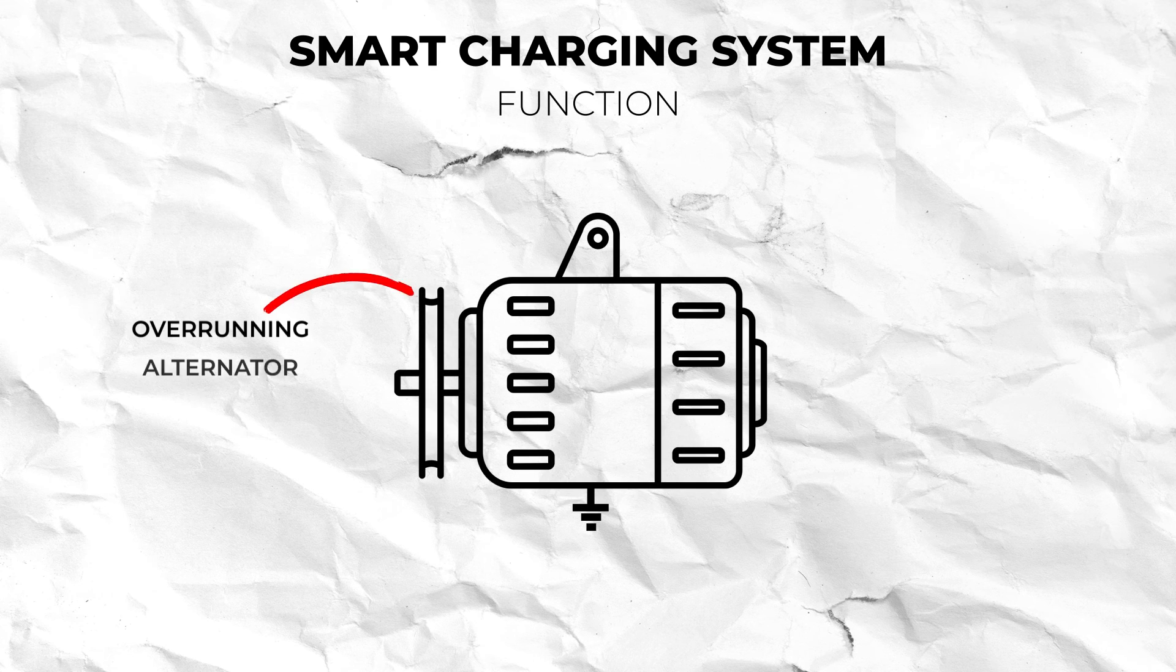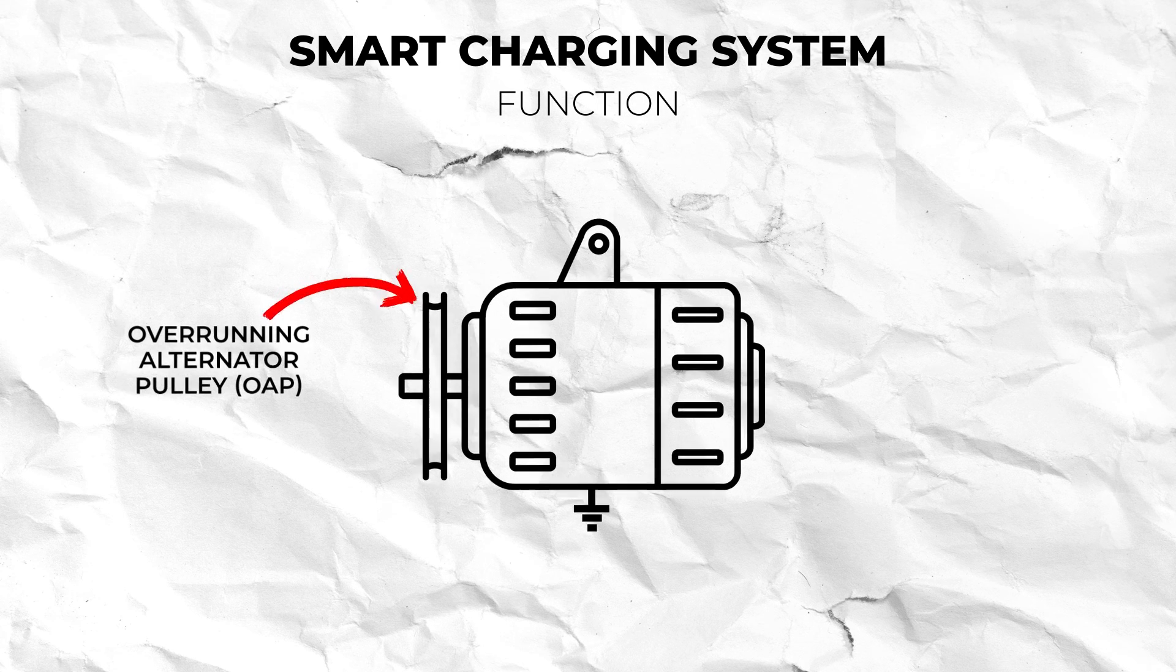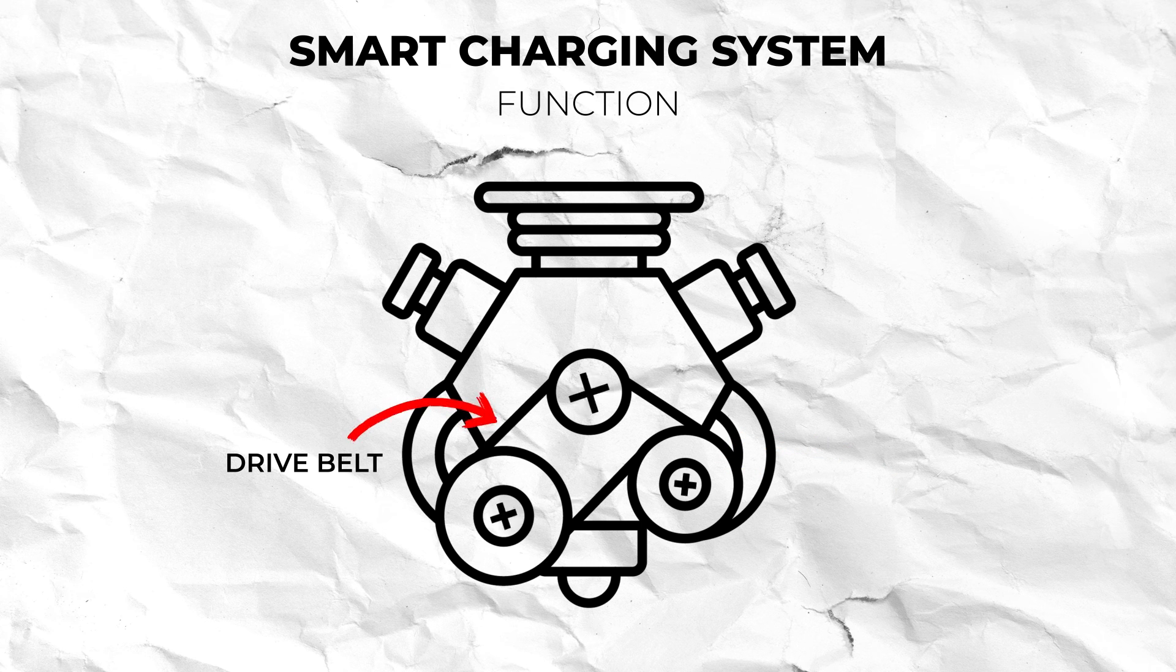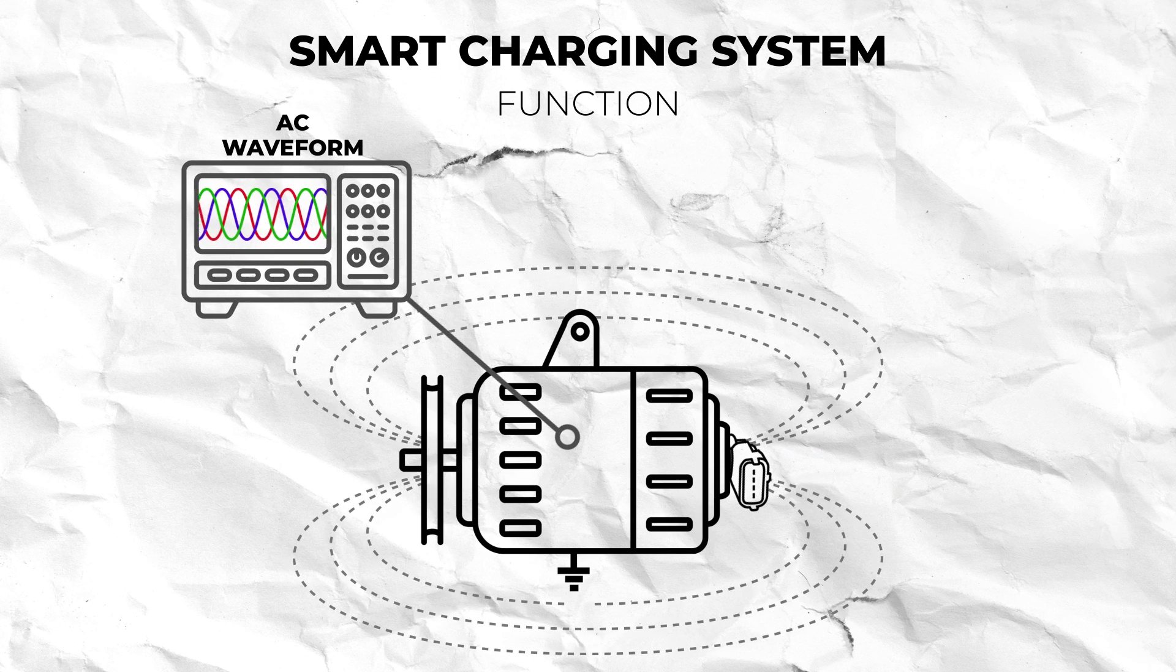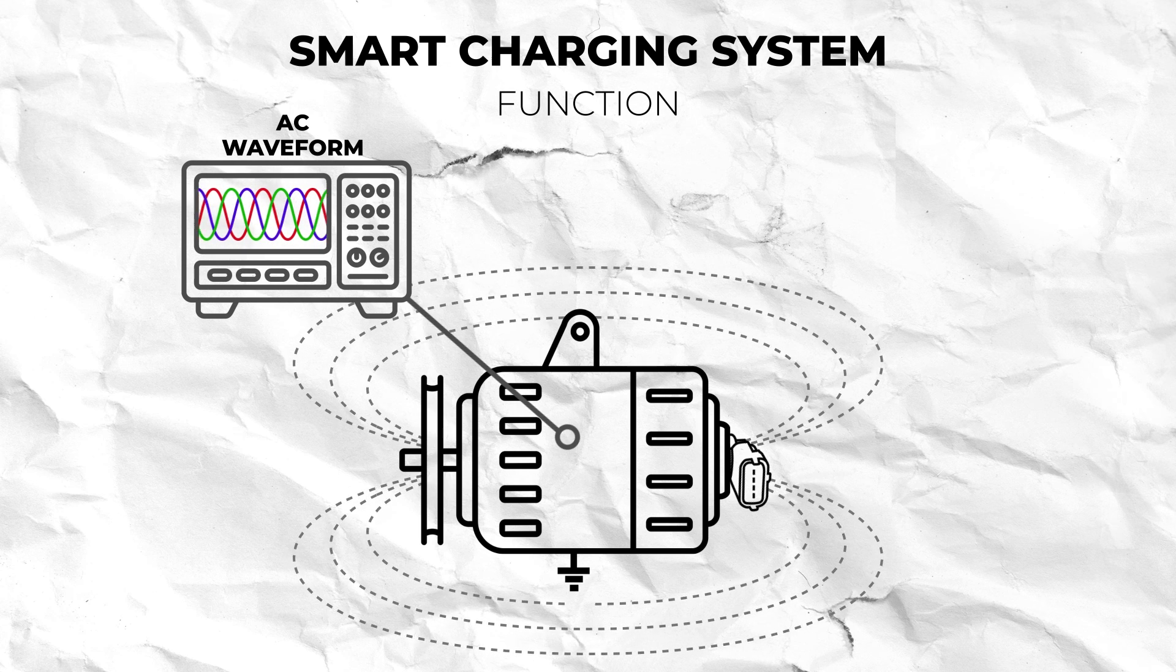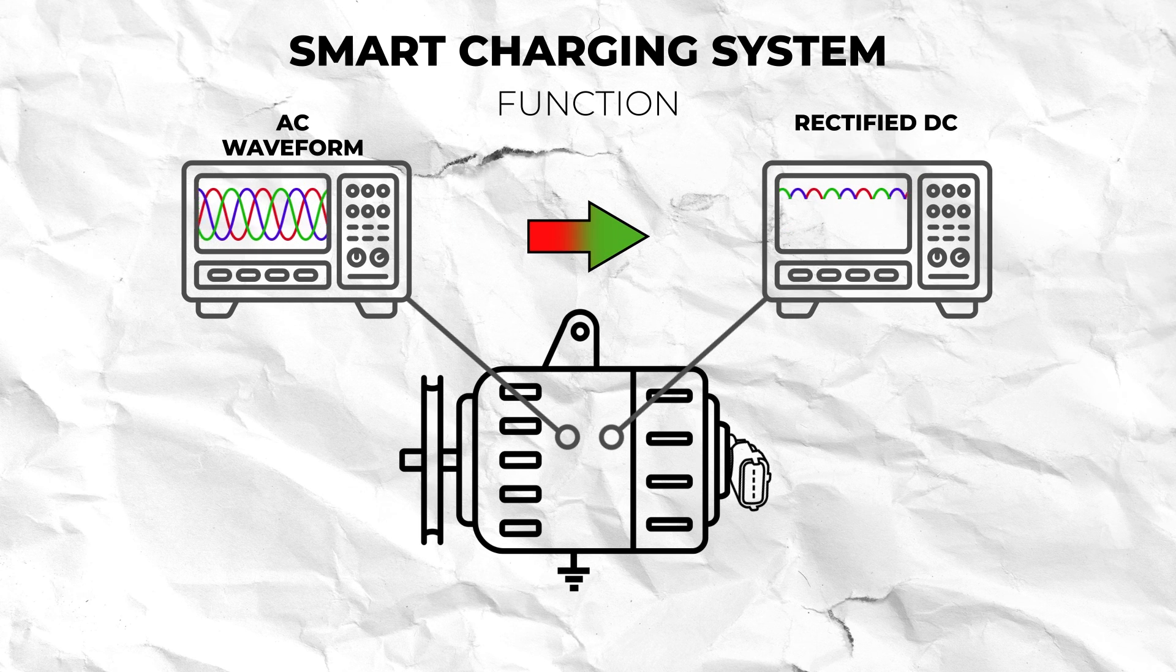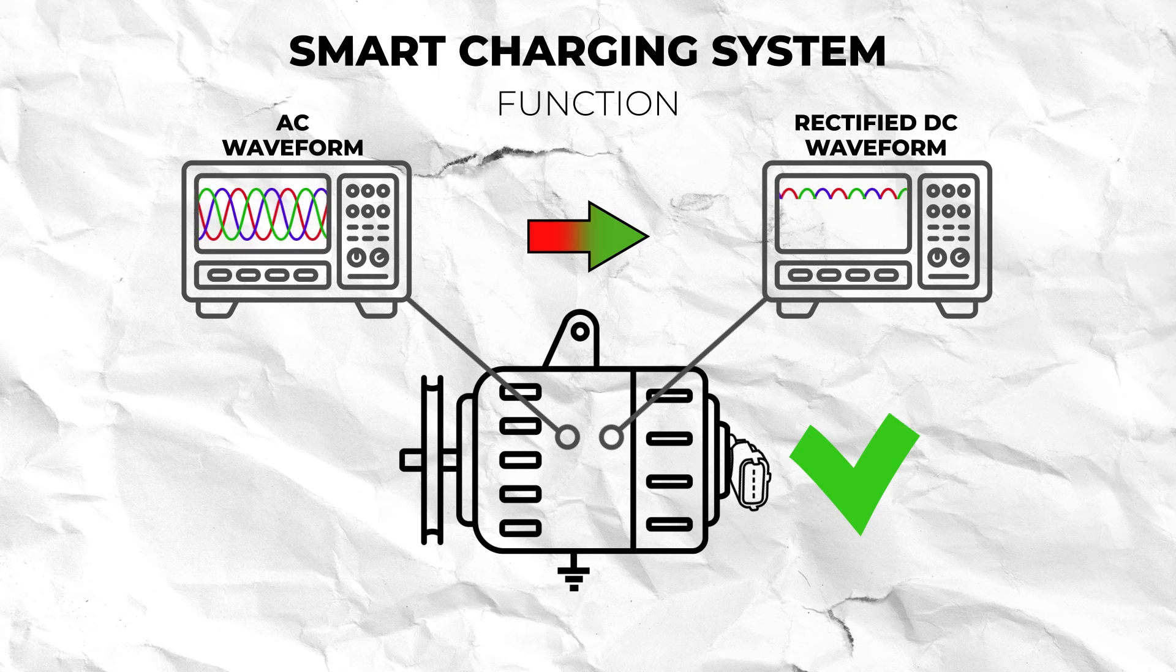The alternator is attached to an overrunning alternator pulley which the drive belt sits on. When the engine is running the drive belt turns the alternator rotor and generates an AC voltage using electromagnetic induction. The alternator rectifies this voltage to DC via its diodes which is what the vehicle's battery runs on.